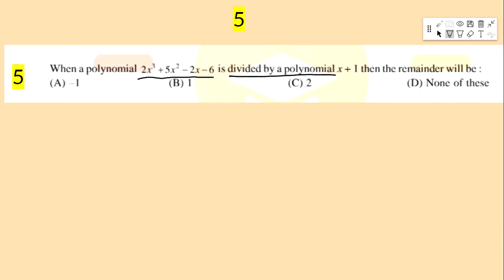Next question: when the polynomial 2x³ + 5x² − 2x − 6 is divided by polynomial x + 1, then the remainder will be — options: −1, 1, 2, none of these.